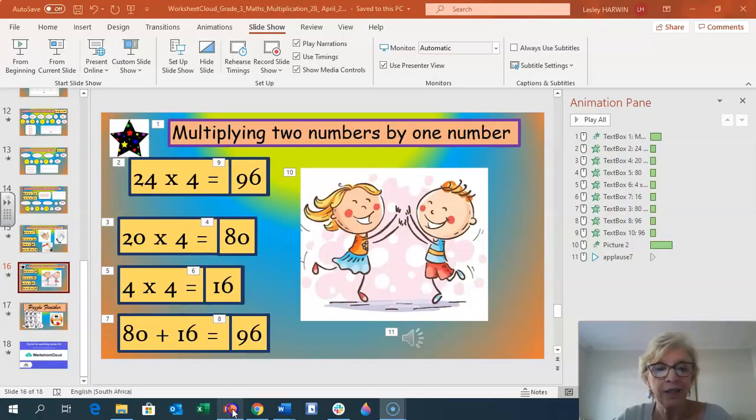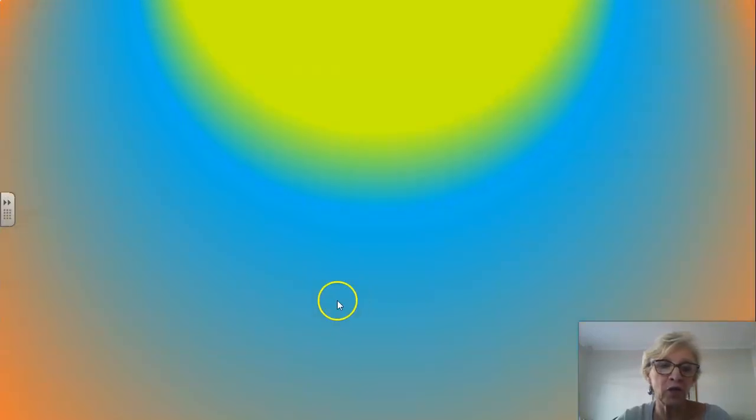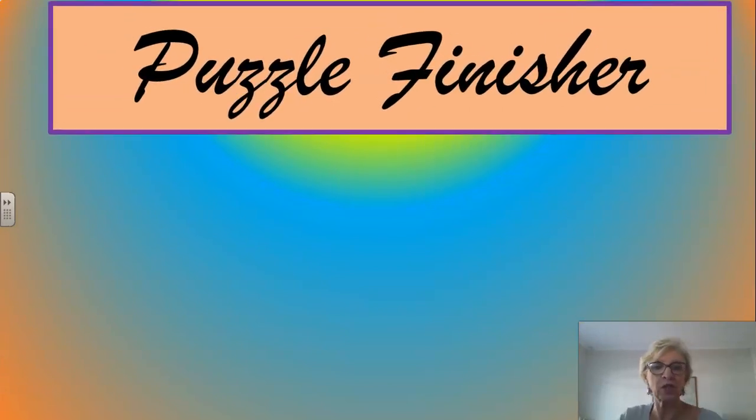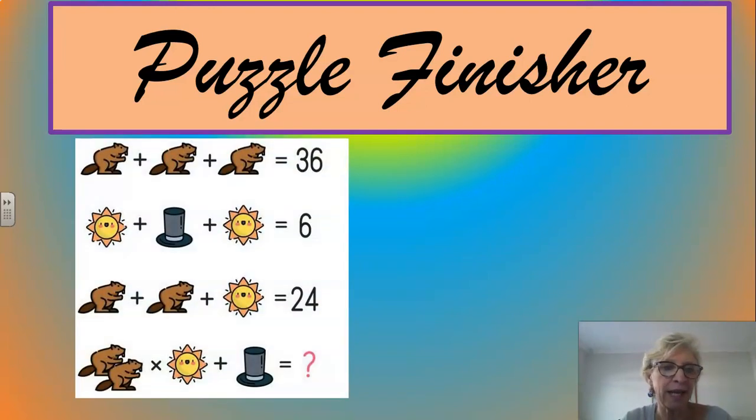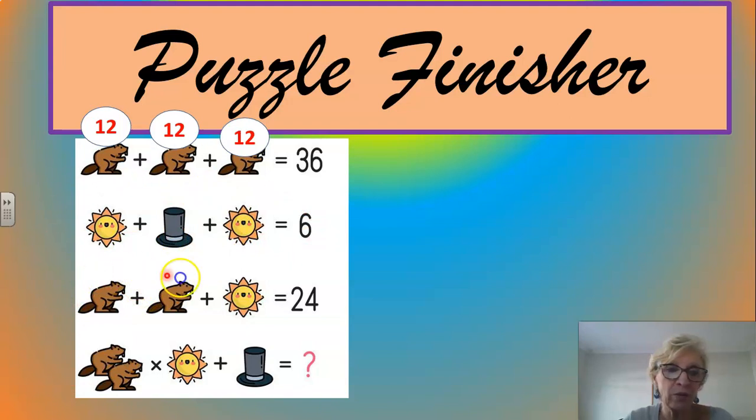We are now going to finish off with our puzzle finisher. Which is a similar one to the one we started our maths with today. Except it's got a little twist at the end. So, there we have our pictures again. Our three little beavers. Each beaver's worth the same. Add them up together. It means you get to a solution of 36. So, we know that 12 plus 12 plus 12 is 36. Grade 3s. I'm going to struggle to do this one here. Because I don't know what the sun is worth. And I don't know what the hat is worth. So, I'm going to just sneak down to the next one.